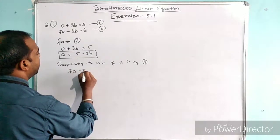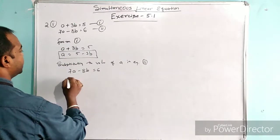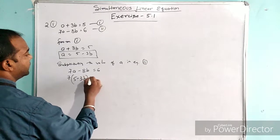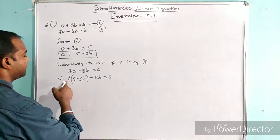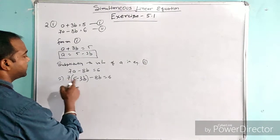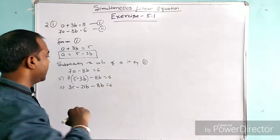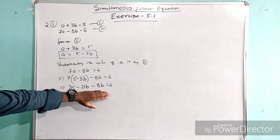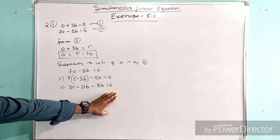Equation 2 is 7a minus 8b equal to 6. We put in the value of a: 7 times (5 minus 3b) minus 8b equal to 6. We multiply out: 7 times 5 is 35, minus 7 times 3b is 21b, and minus 8b equal to 6.